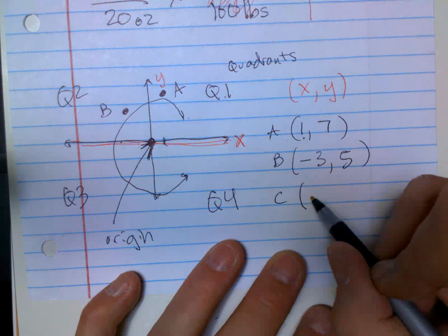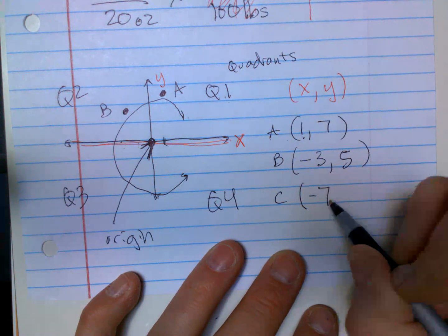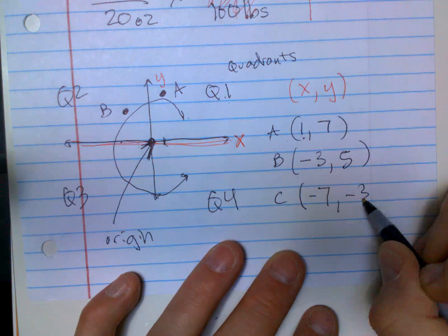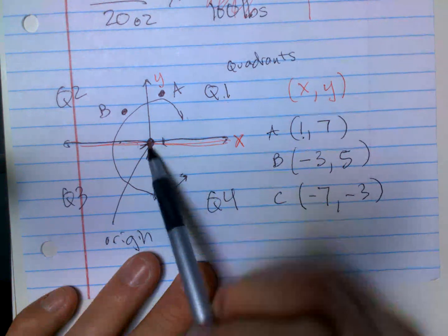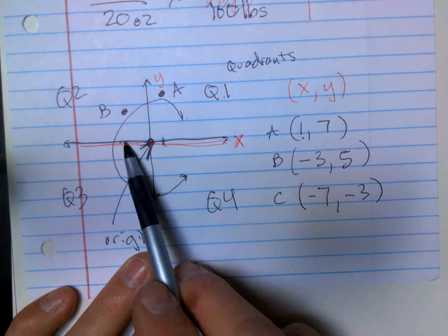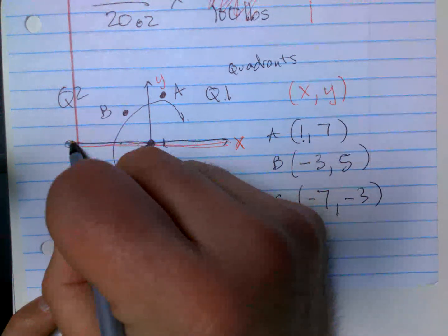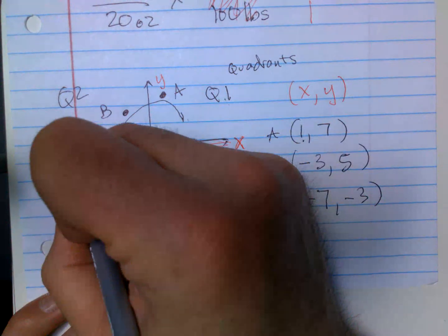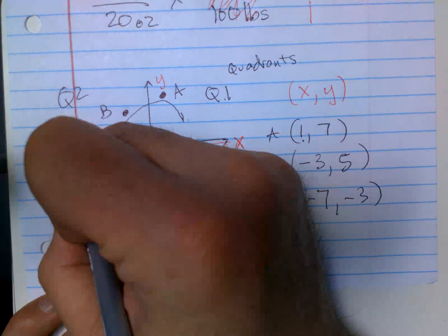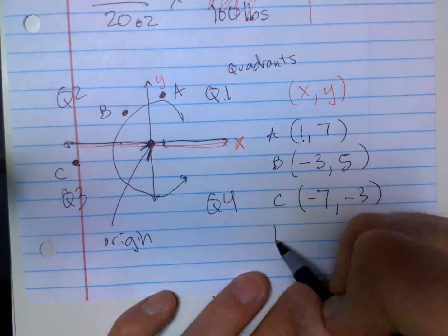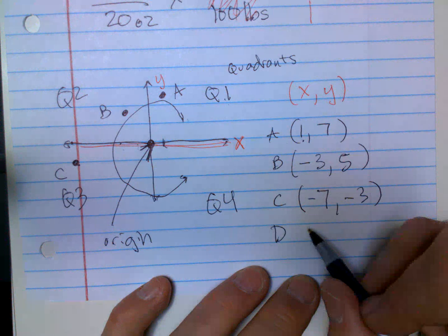Let's say C is negative negative - negative seven, negative three. So this was negative three, maybe negative six, negative seven, going to be all the way over here, and then only down three, somewhere over here.